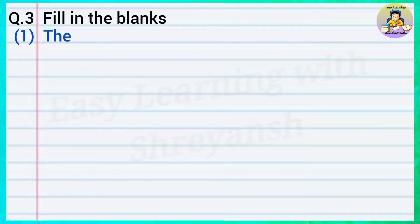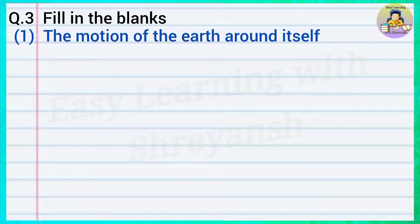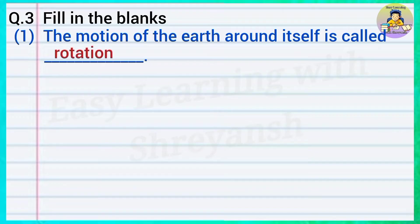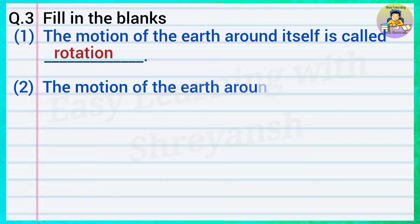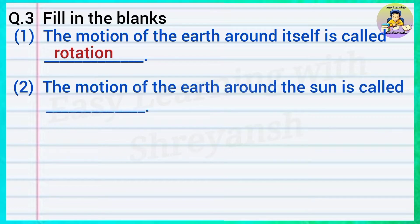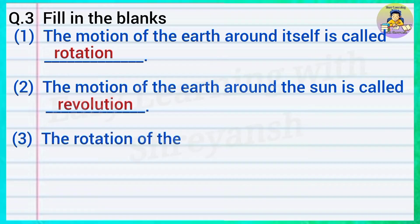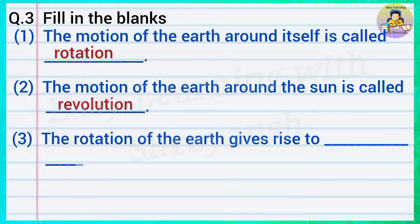Question number three, fill in the blanks: One — the motion of the earth around itself is called — answer: rotation. Two — the motion of the earth around the sun is called — answer: revolution. Three — the rotation of the earth gives rise to — answer: day and night.